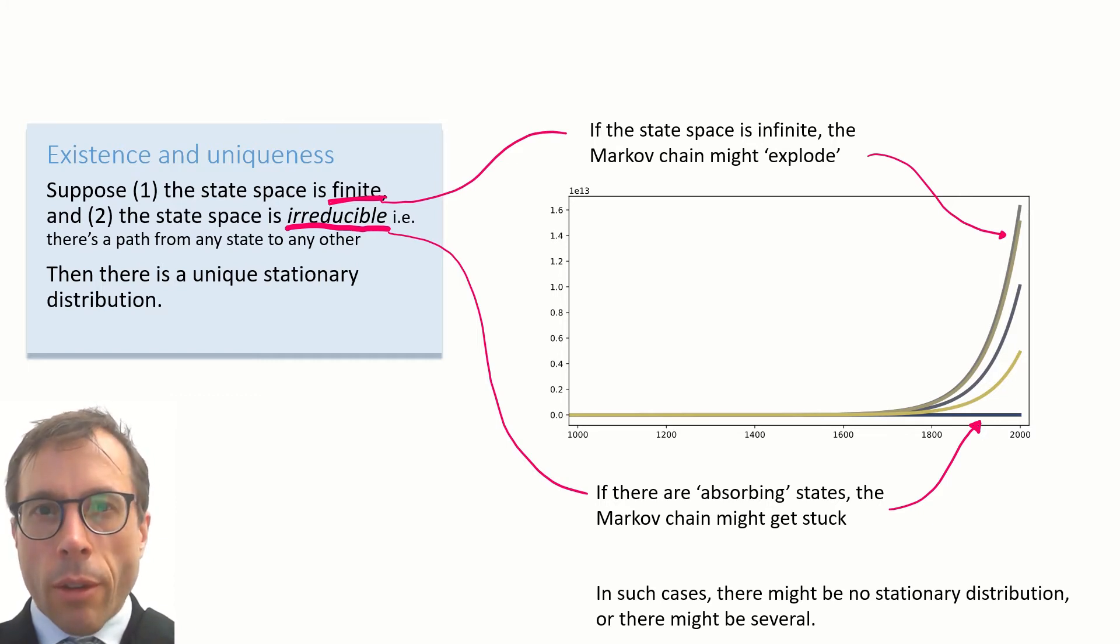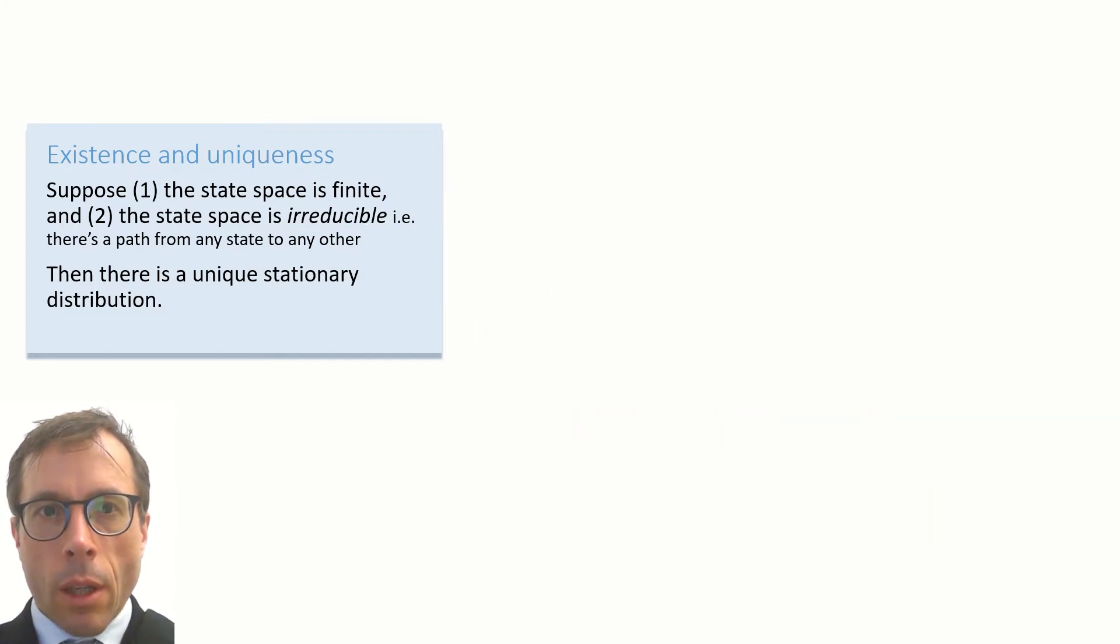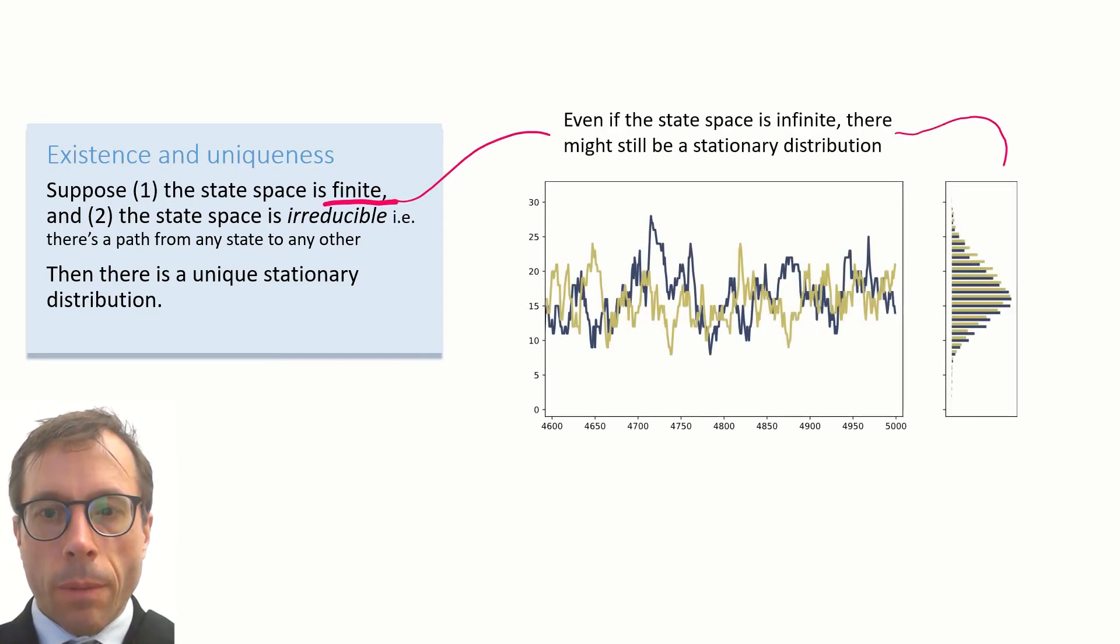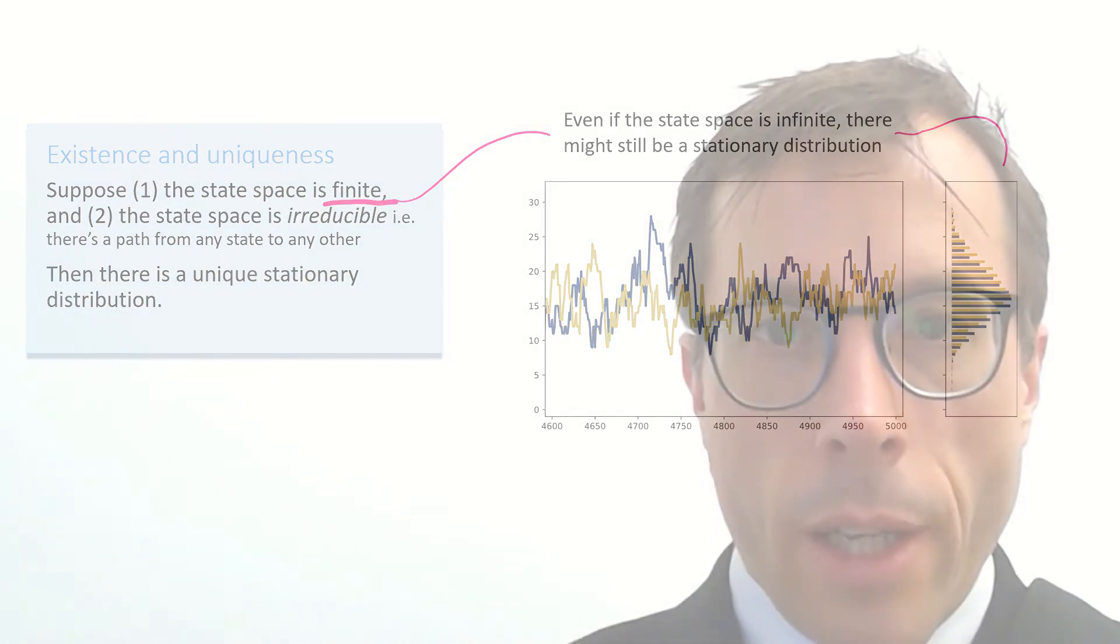I should also say that this theorem just goes one way. It says if these conditions are met, then the chain has a stationary distribution. It's not an if and only if. Here is an illustration: our active users model. We set this up to have an infinite state space, but it didn't explode—it just settled down and it does have a stationary distribution.